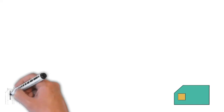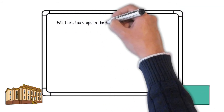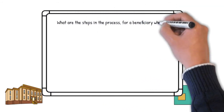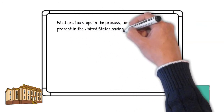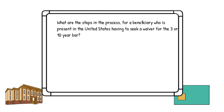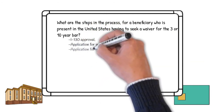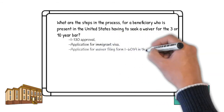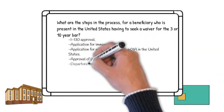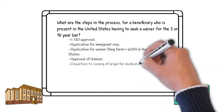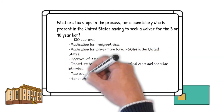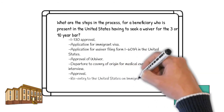What are the steps in the process for a beneficiary who is present in the United States and has to seek a waiver for the three or ten year bar? If the beneficiary qualifies for a waiver, the beneficiary may file the initial petition and waiver while present in the United States. After the initial petition is approved, the application for the immigrant visa follows. When applying for a waiver of one of the bars, the beneficiary will need to apply for the waiver with USCIS by filing Form I-601A while in the U.S., before scheduling the consular interview.